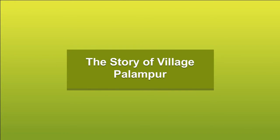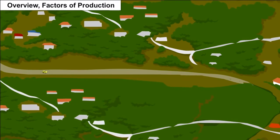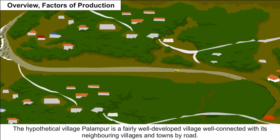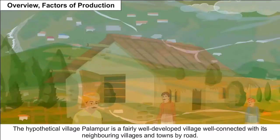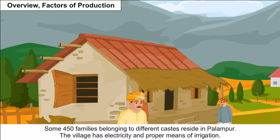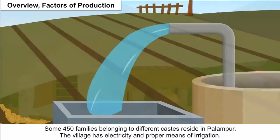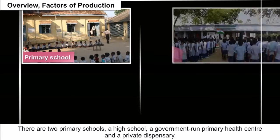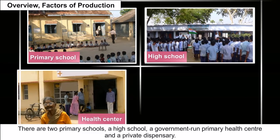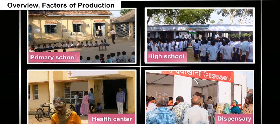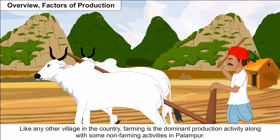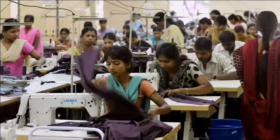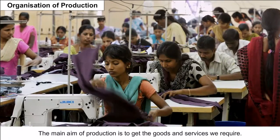The Story of Village Palampur. The hypothetical village Palampur is a fairly well-developed village, well-connected with its neighboring villages and towns by road. Some 450 families belonging to different castes reside in Palampur. The village has electricity, proper means of irrigation, two primary schools, a high school, a government-run primary health center, and a private dispensary. Like any other village in the country, farming is the dominant production activity, along with some non-farming activities.